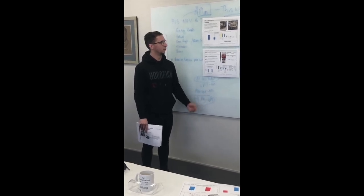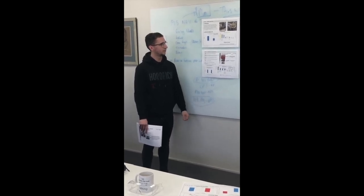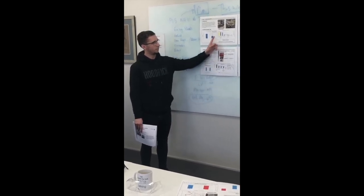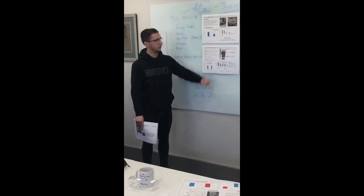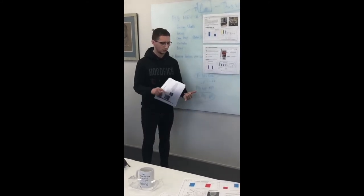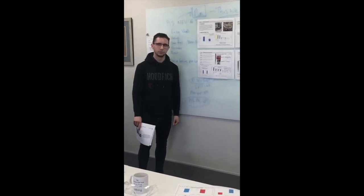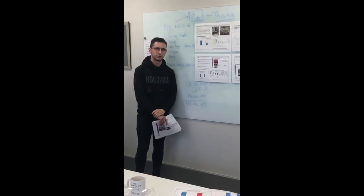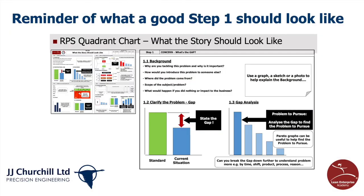Our goal is to get it down to about 120 minutes — two hours. At the moment we have a gap of around 109 minutes, so our main focus will be reducing the loading, unloading, and measuring of the tools and fixtures. To recap, what should the story look like for step one? There should be some background to give context to the problem and set the scene.